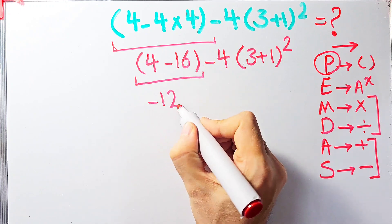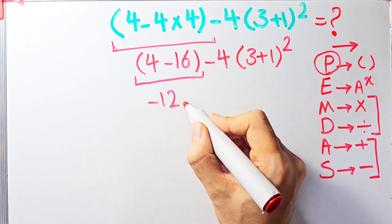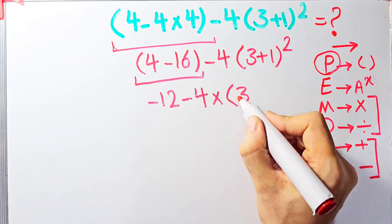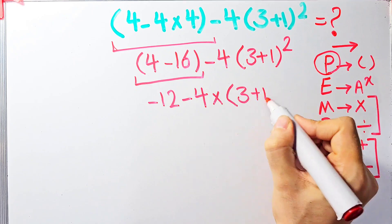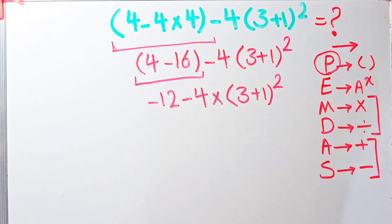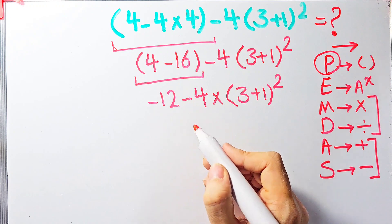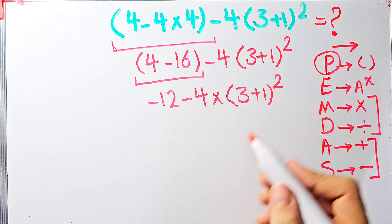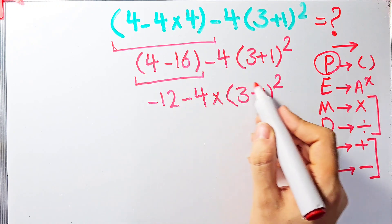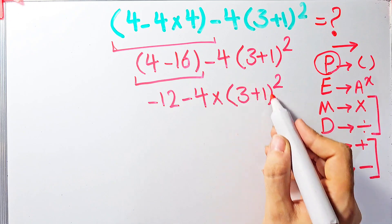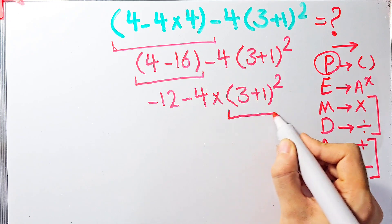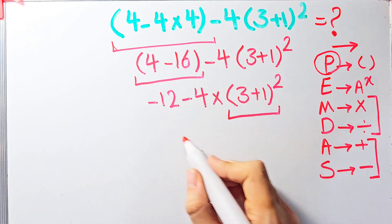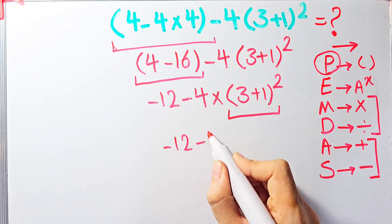Now we have negative twelve minus four, times open parenthesis three plus one close parenthesis, to the power of two. We simplify the remaining parenthesis: three plus one equals four. The expression now becomes: negative twelve minus four times four to the power of two.